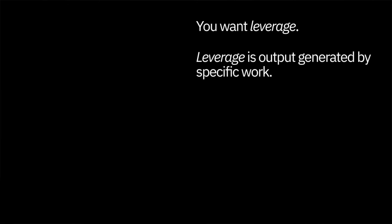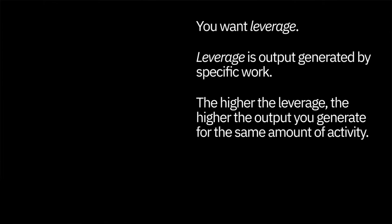Productivity is output divided by the labour required. To increase productivity, you can increase the speed you work at, or you can change what you do — the latter is the better choice. You want to increase the ratio of output to activity rather than increasing activity itself. You want leverage. Leverage is output generated by specific work. The higher the leverage, the higher the output you generate for the same amount of activity. Arrange work in your black box so every activity is high leverage. You can do this through automation and work simplification. If you can automate a task or make it simpler, invest the time to do so. Increased productivity comes from stressing output and increasing leverage — increased activity can result in the opposite.